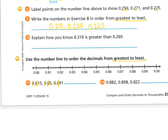Now I'm looking at my hundredths: I've got a one, a five, and a nine. If I'm going greatest to least, nine would be the biggest — so zero and 891 thousandths first. Now comparing one and five: don't let the extra digits confuse you, I'm just looking at the hundredths spot. Five is bigger than one, so zero and 850 thousandths comes next, and finally zero and 815 thousandths.